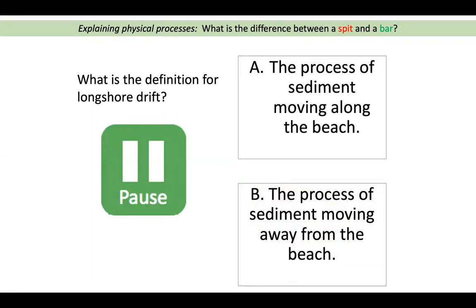The final one — really important — what is the definition for longshore drift? A: the process of sediment moving along the beach, or B: the process of sediment moving away from the beach? That was A — along the beach.